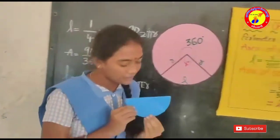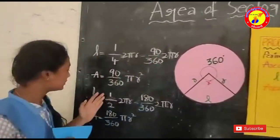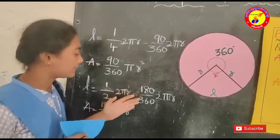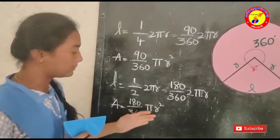If the angle of the sector is 180 degrees, it is the half of the circle. Then L is equal to 1 by 2 into 2πR, which is equal to 180 by 360 into 2πR. Then the area is equal to 180 by 360 into πR square.